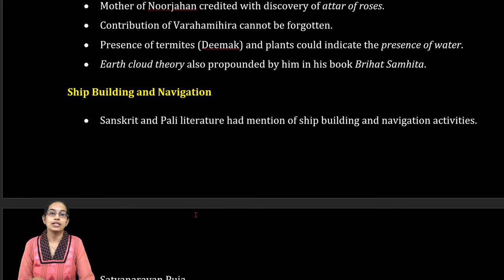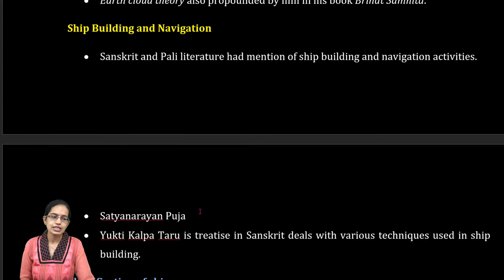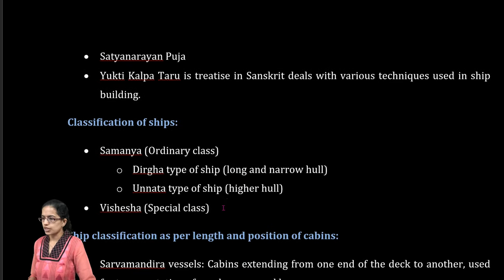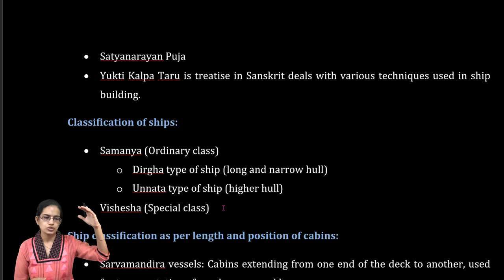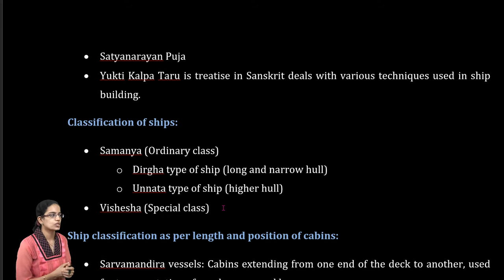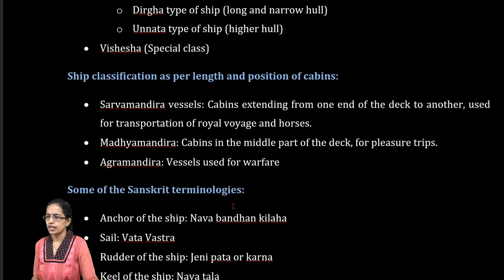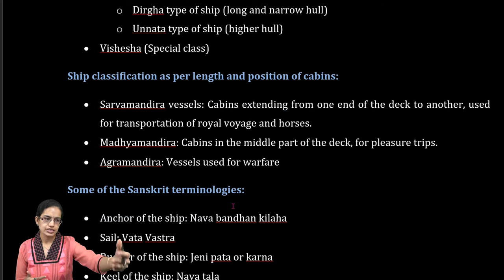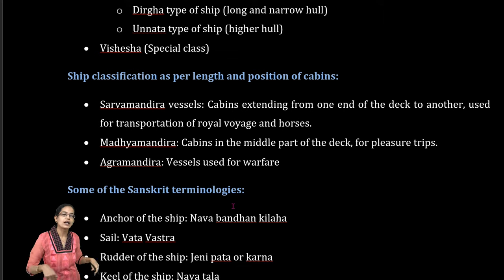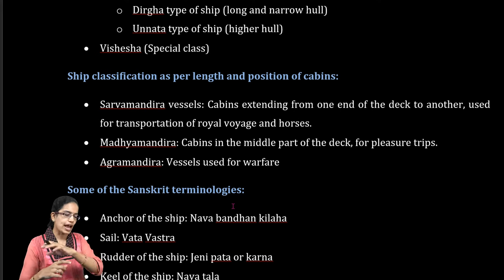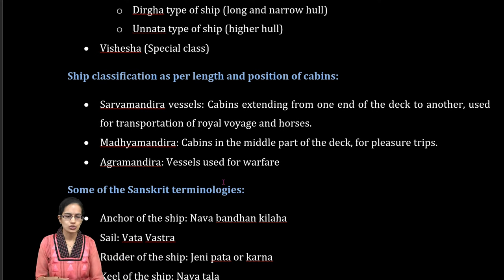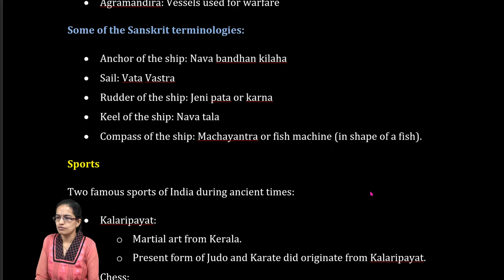The next important industry was shipbuilding. Shipbuilding and navigation were very important means of transport during that time. Ships were classified in two ways: ordinary (Samanya) and special (Vishesh). Ships had either a higher hull (Unnat) or a long and narrow hull (Dirg). Classification was also based on three criterias per length: Agra Mandir for warfare vessels, Madhyam Mandir (middle part of the dock) for recreation, and Sarvamandir where cabins extended from one part to another, used for royal voyages or transport of horses. Various Sanskrit terms were also used for different types of ships.